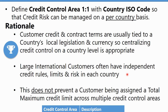Even if you go this route, it does not prevent a customer being assigned a total maximum credit limit across multiple credit control areas. Even with many-to-one mapping — many US company codes all mapped to one US credit control area — you can still maintain a maximum credit limit across all credit control areas that customer belongs to. So you get the control but also a centralized view per country.